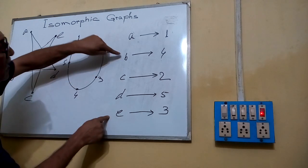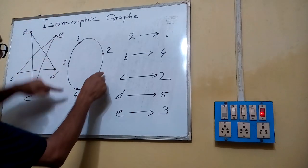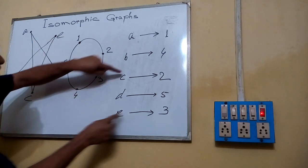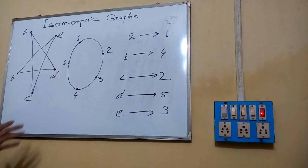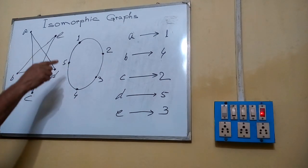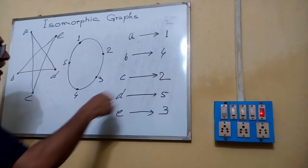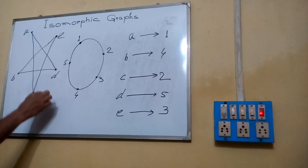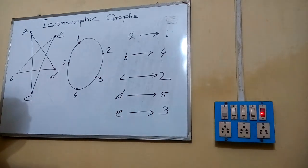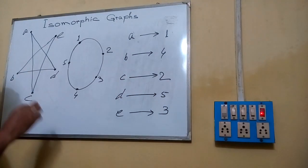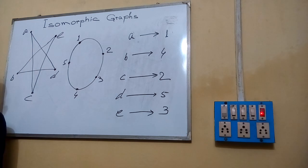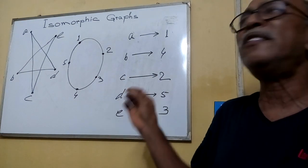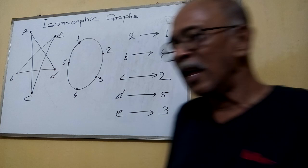Edge BE is here, corresponding to edge 4-3 there. Edge CE is here, corresponding to edge 2-3 there. So we have checked all edges: for each vertex there is a corresponding vertex, and for each edge we get a corresponding edge. This one-to-one correspondence between vertices and edges means these two graphs are isomorphic graphs.